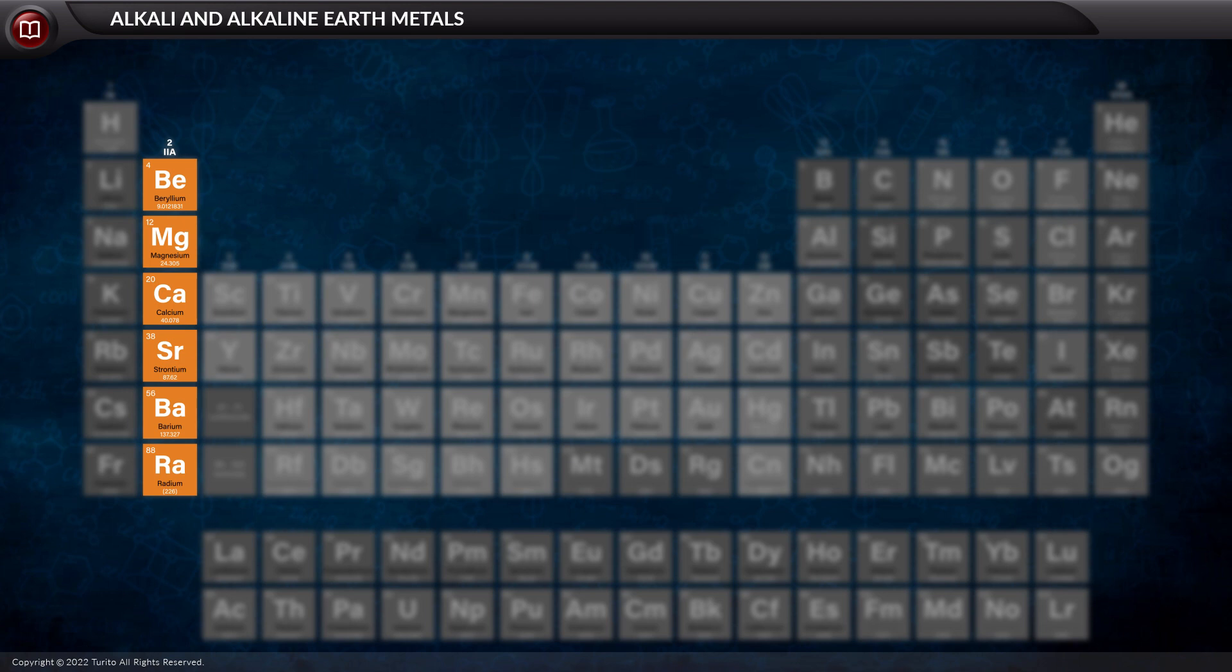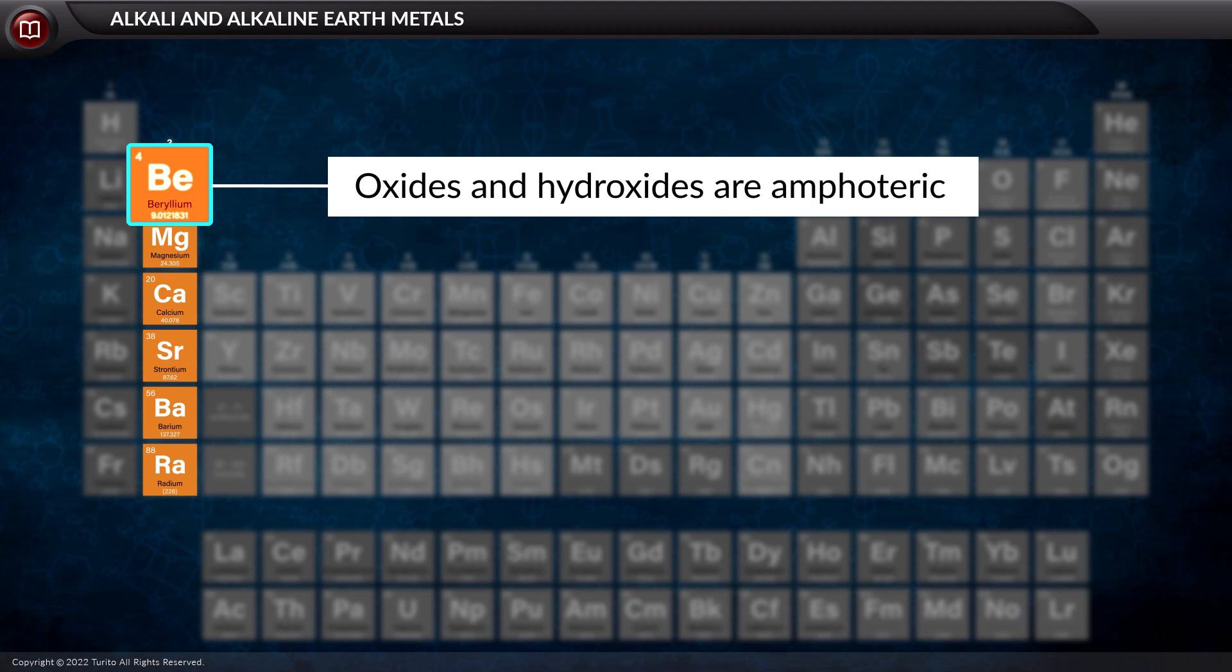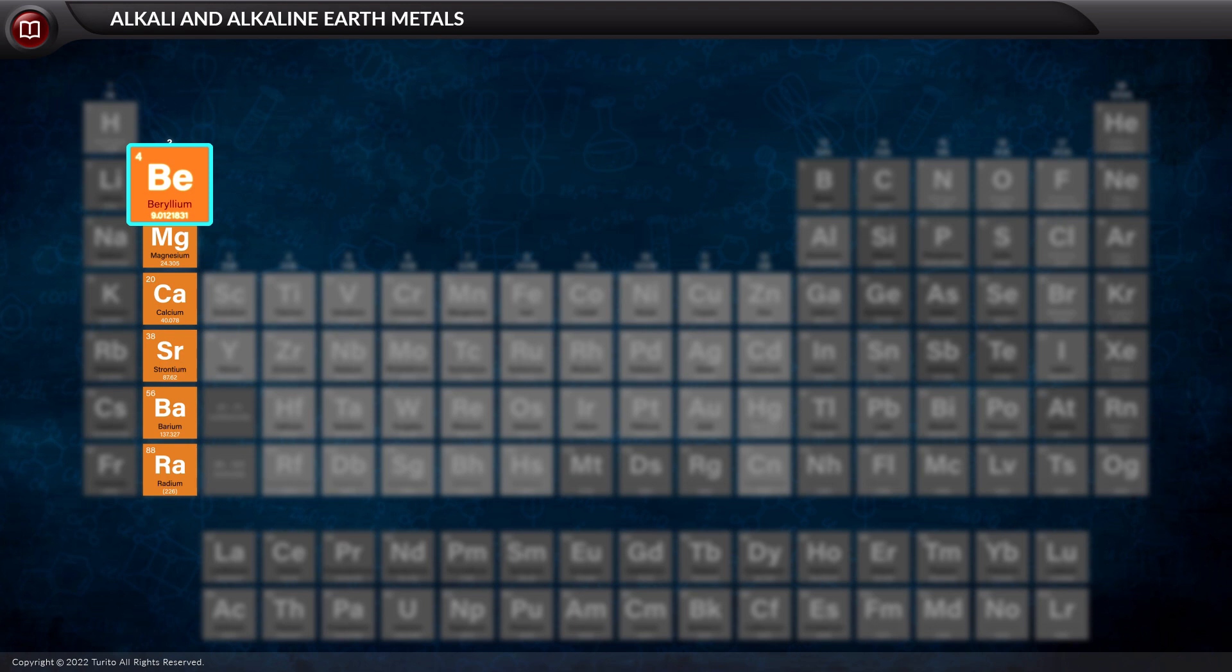However, do you know that beryllium is an earth metal but not an alkaline earth metal? This is because its oxides and hydroxides are amphoteric and not alkaline. However, due to the similarities in its properties and behavior, it is placed with alkaline earth metals.